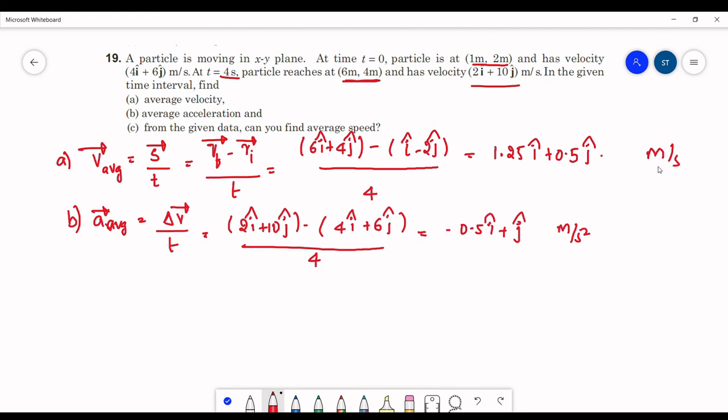Last part, from the given data can we find the average speed. Average speed is overall distance upon overall time taken. Distance is the length of the path covered but here we are only given the initial point and the final point.